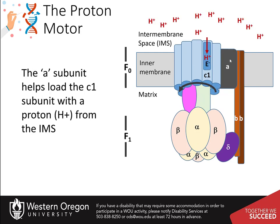In the first step within the F-naught domain, the interaction of the C-1 subunit with the A subunit causes the conformational change of the C-1 subunit that opens a half channel open to the inner membrane space, or IMS. A proton flows in and coordinates with the negatively charged glutamate residue. The C subunits rotate in a counterclockwise direction relative to the stationary stator and linker proteins, the A and delta subunits.